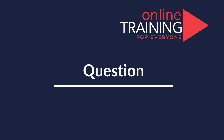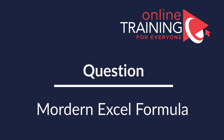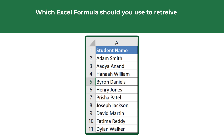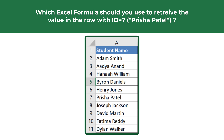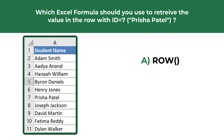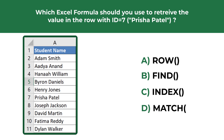Here's a question testing your knowledge of modern Excel formulas. You're presented with a list of student names in column A and need to decide which formula to use to retrieve the value of the row with ID 7 — the value in this row is Prisha Patel. The four choices are: A) ROW, B) FIND, C) INDEX, D) MATCH.